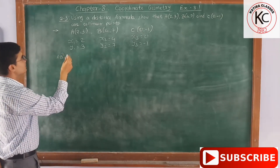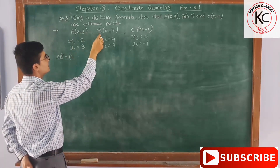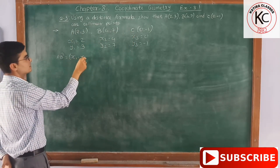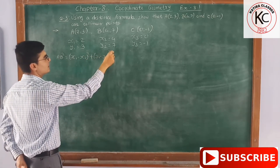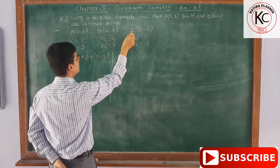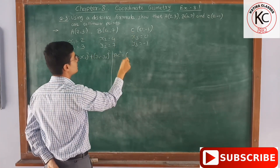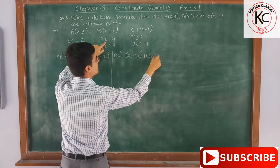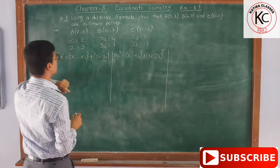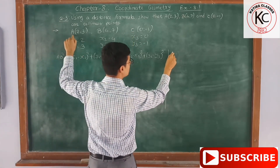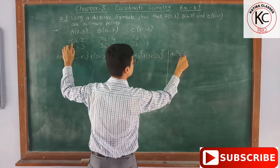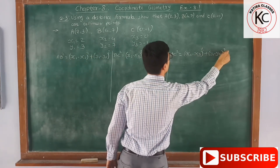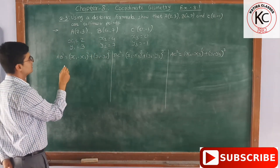In this sum we will have to find the distance between these three points, so we will do three calculations. First we will find the distance between A and B, then B and C, and then A and C. So AB² = (x1 − x2)² + (y1 − y2)². BC² = (x2 − x3)² + (y2 − y3)². And AC² = (x1 − x3)² + (y1 − y3)².